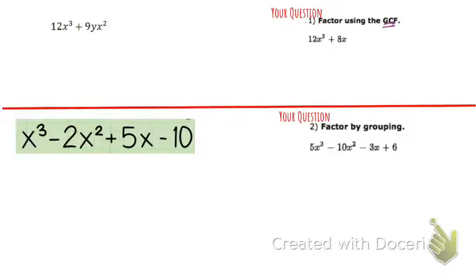So you're looking at both of these and thinking, what can I pull out of each of those terms? What could I divide each of those terms by? So I like to first look at just the regular numbers, 12 and 9. And I know I can divide both 12 and 9 by 3.